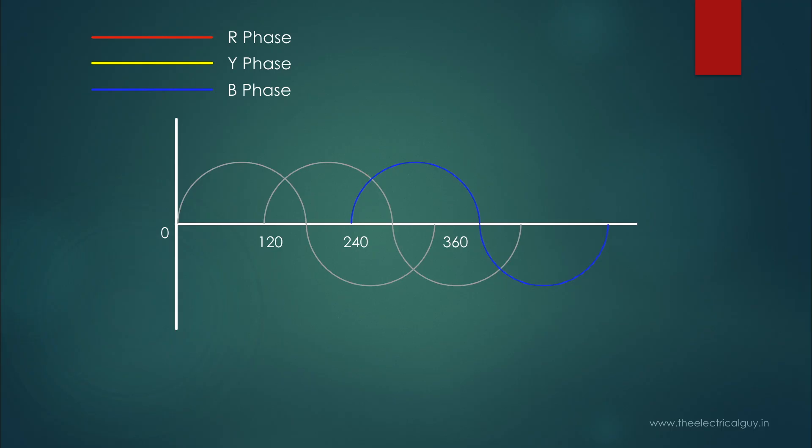We can also say that the waveform of winding Y is leading the waveform of winding B by an angle of 120 degrees because winding Y is reaching its peak value before 120 degrees of winding B. Or we can say that the waveform of winding Y is lagging the waveform of winding R by 120 degrees because winding Y is reaching its peak value after 120 degrees of winding R. So if you observe the sequence of reaching peak values, you will find that winding R is reaching its peak value first, and then winding Y, and then winding B. And this sequence will continue till the magnet is rotating in a clockwise direction.